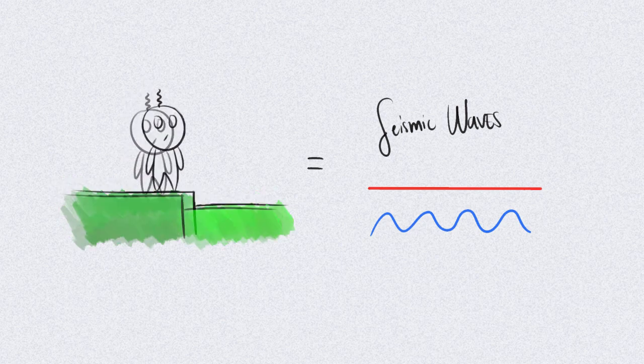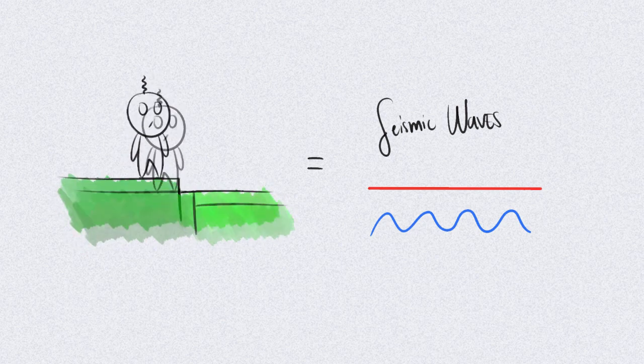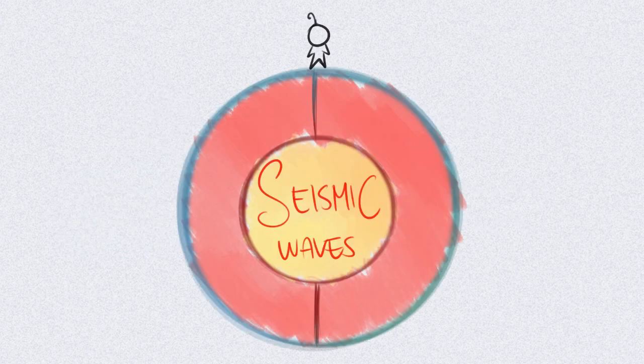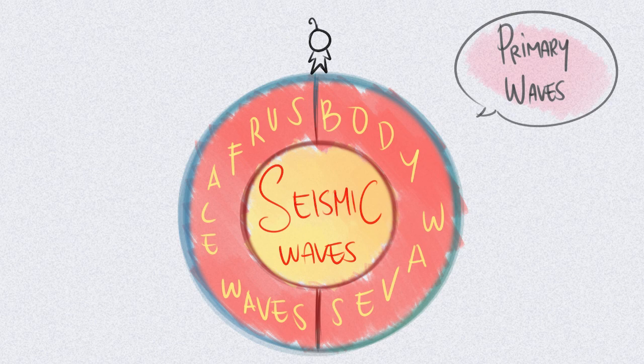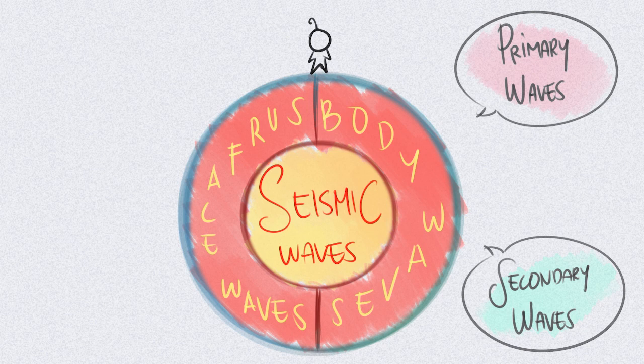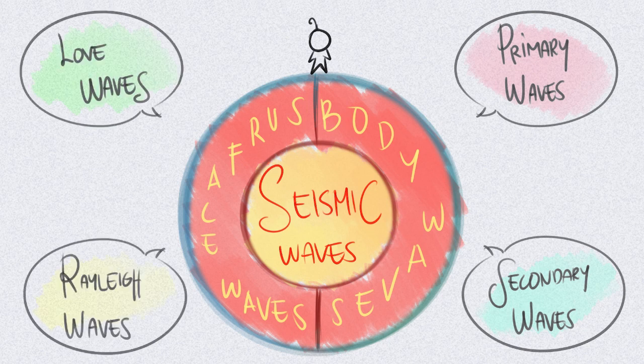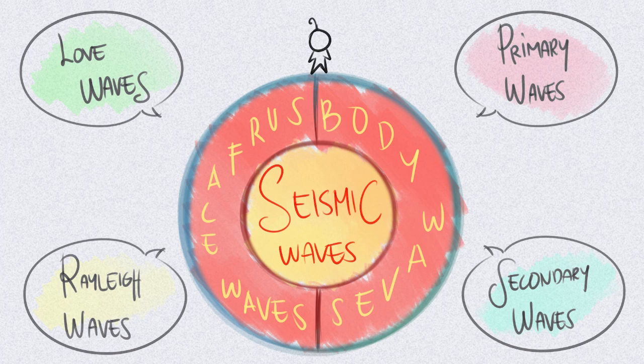Seismic waves are energy waves that are released when the plates move. The two main types of these waves are the body and the surface waves. The body waves have two subtypes, the primary and the secondary waves. These are the waves that travel through the Earth's interior. The surface waves have two subtypes, the Love and Rayleigh waves. These waves can travel only on the Earth's crust.